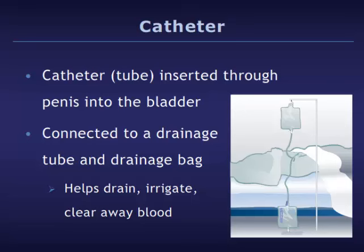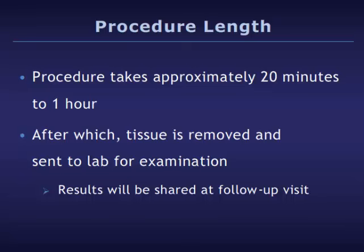At the end of the procedure, the surgeon will insert a small tube called a catheter up through the penis and into the bladder. The catheter is connected to a drainage tube and drainage bag. It is also usually connected to an irrigation tube, which allows water to irrigate through the bladder and clear any blood away. The entire TURP procedure usually takes about 20 minutes to an hour.